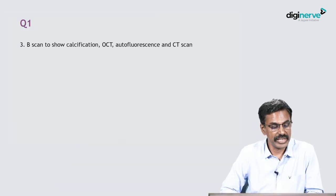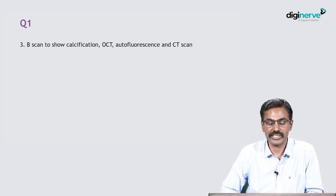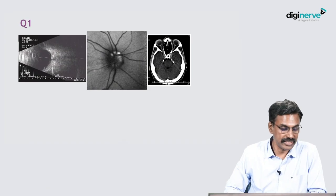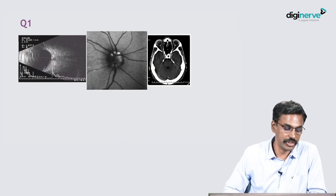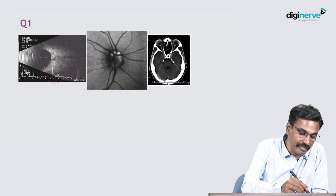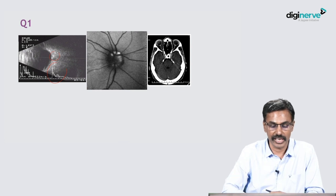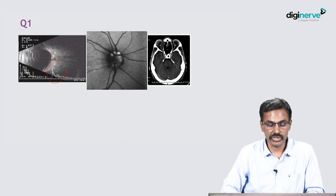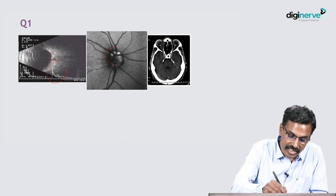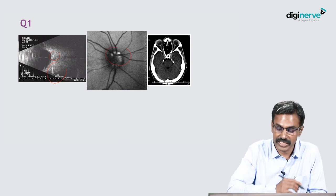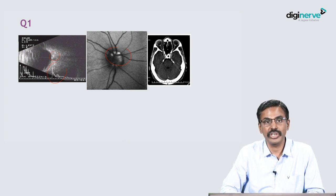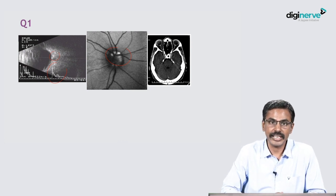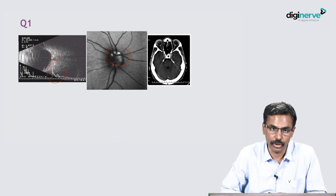The investigative modalities include B-scan to show calcification, OCT which will show autofluorescence, and CT scan may be done. This B-scan shows a spike which corresponds to the calcification. OCT shows autofluorescence because of the calcification, and even though we should not routinely go to the level of a CT scan to detect drusen.